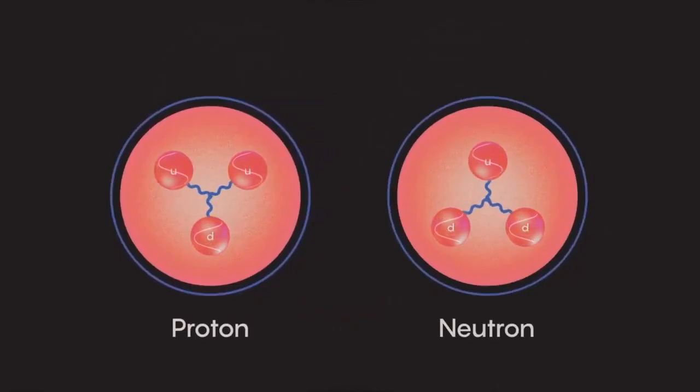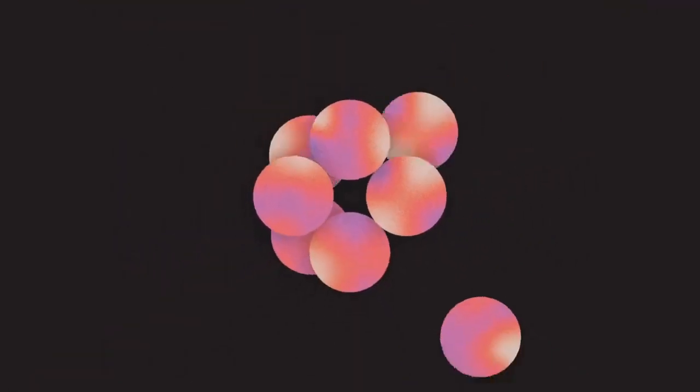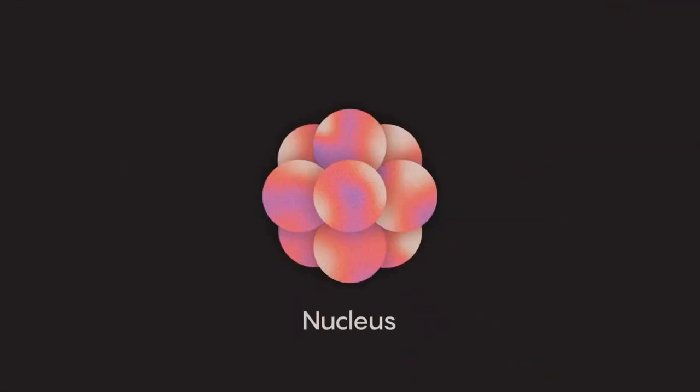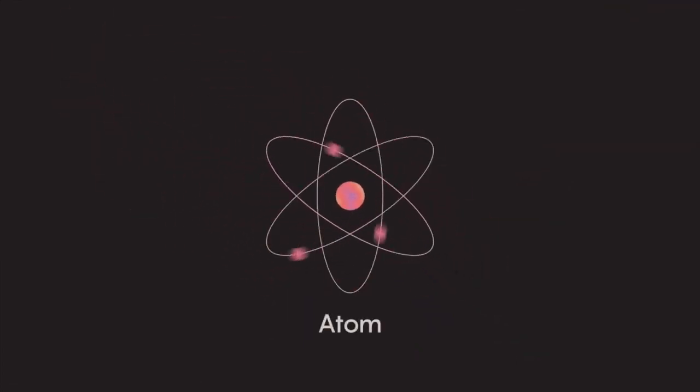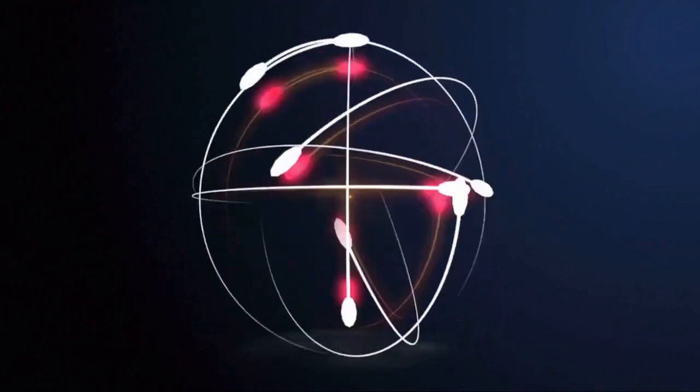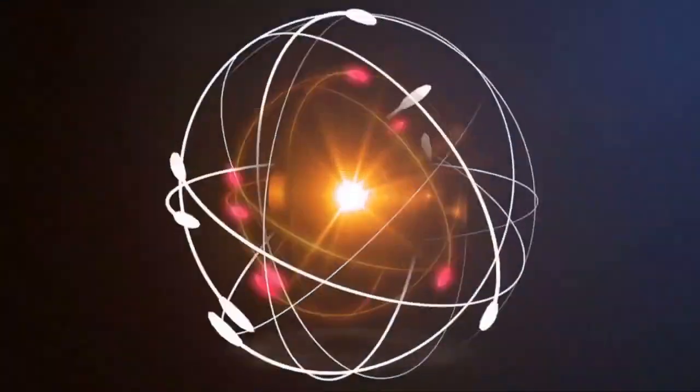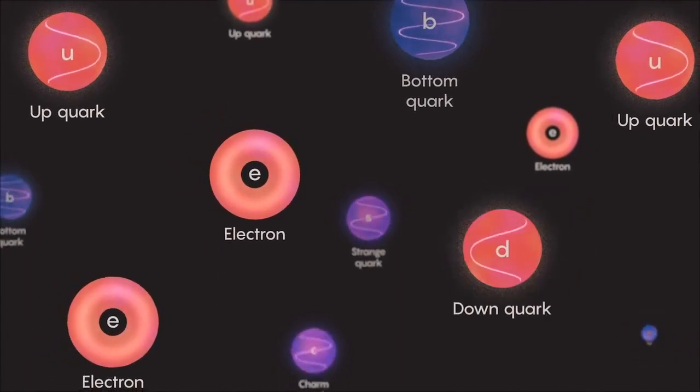The smallest thing known to mankind by far is a quark. Quarks are much smaller than both atoms and protons. An atom typically has a diameter of around 0.1 to 0.5 nanometers, while a proton has a diameter of around 0.87 femtometers, or about 100,000 times smaller than an atom.